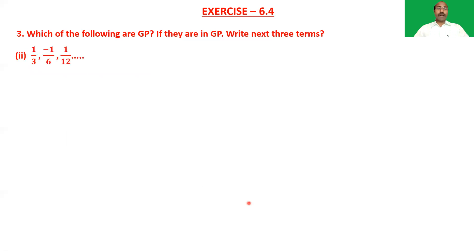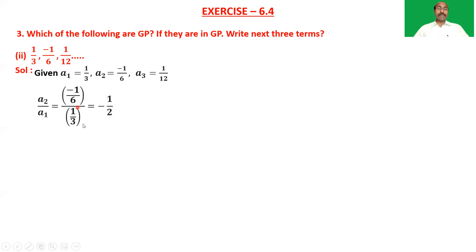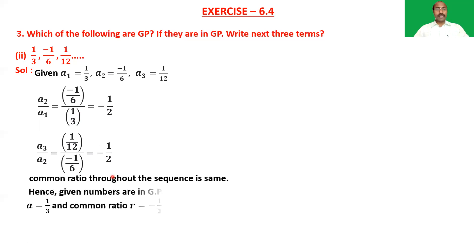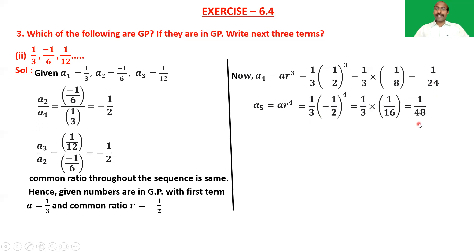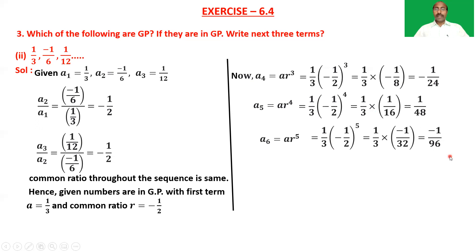Second sequence: 1/3, −1/6, 1/12, and so on. a₁ = 1/3, a₂ = −1/6, a₃ = 1/12. a₂/a₁ = (−1/6)/(1/3) = −1/2 and a₃/a₂ = (1/12)/(−1/6) = −1/2. The common ratio is the same, so these are in GP with a = 1/3 and r = −1/2. The next three terms: a₄ = 1/3 × (−1/2)³ = −1/24, a₅ = 1/48, and a₆ = −1/96.